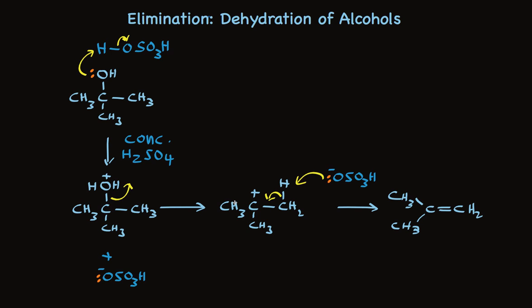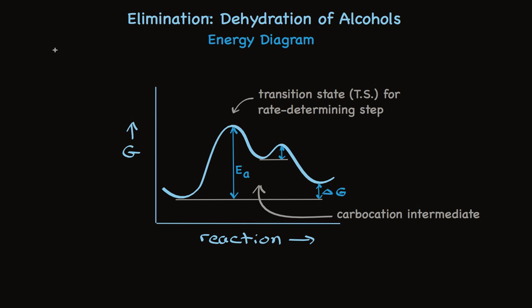The similarity to a regular E1 reaction is easily seen in the energy diagram. The E1 energy diagram has two humps. A high activation energy barrier for the first step, that's the rate determining step, to form a carbocation and then rapidly loss of proton to form the alkene. The acid catalyzed dehydration by an E1 mechanism has three humps. It looks exactly like the one you're seeing here, except there's an earlier step.